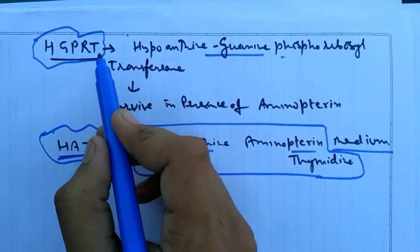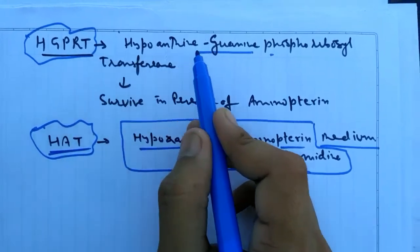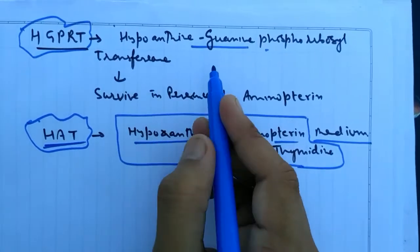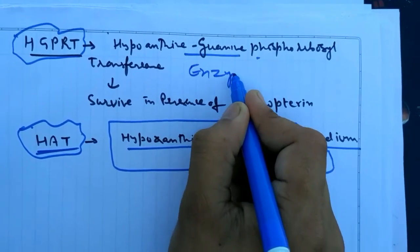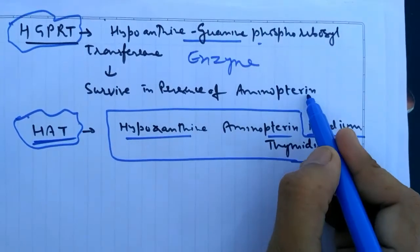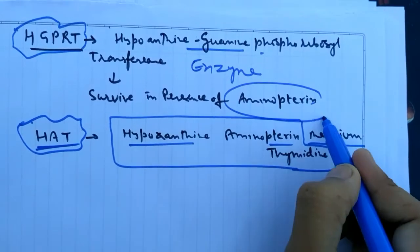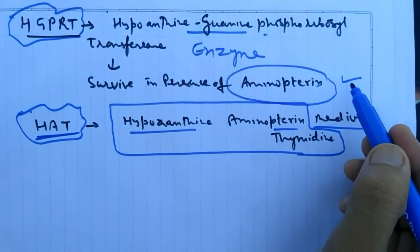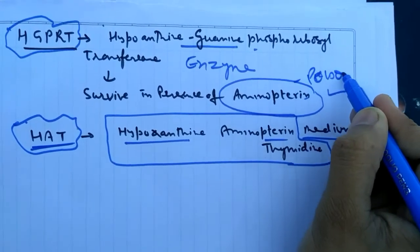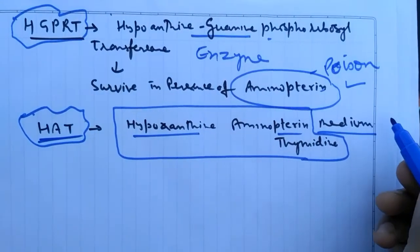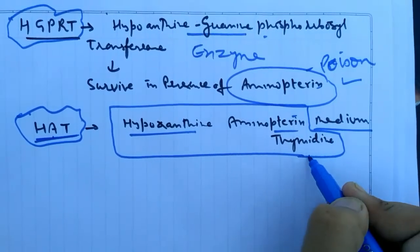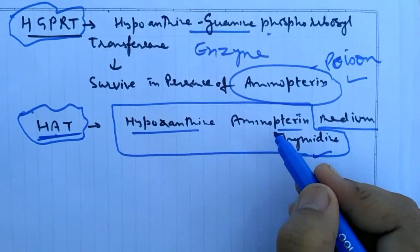Now here is the meaning of HGPRT. It is hypoxanthine guanine phosphoribosyl transferase. It is an enzyme that helps the cell to survive in the medium containing aminopterin. As I have told earlier, it is a poison that inhibits the growth of cells in the culture medium.